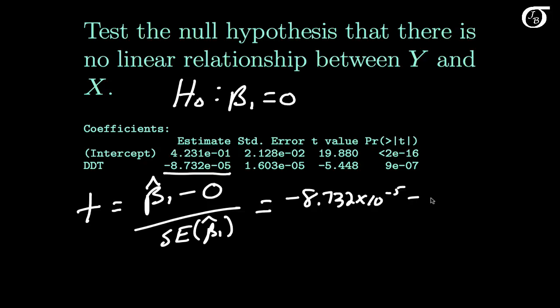And we subtract off the hypothesized value of 0. And in the bottom we divide by the standard error of beta 1 hat, which is given right beside beta 1 hat in the output as 1.603 times 10 to the negative 5.